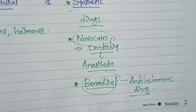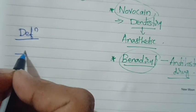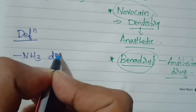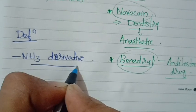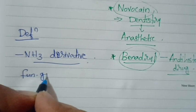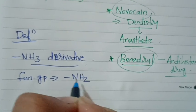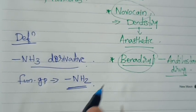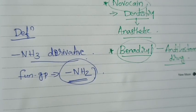Synthetic amines contain an amino group. Two drugs are used with an amino group. Now let's see the definition of amines. If we look at a familiar item, it is ammonia — NH3. Amines are derivatives of ammonia. Amine has a functional group NH2. Ammonia is NH3 and amine is NH2. Remember that.